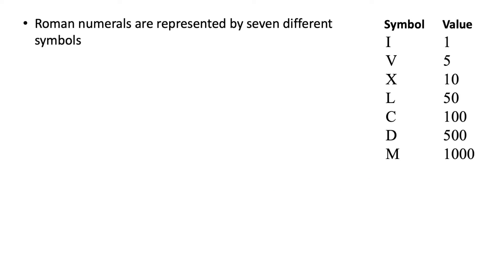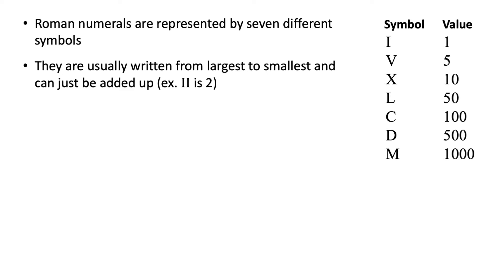Roman numerals consist of 7 different symbols, and each one corresponds to a different number, as you can see on the right. Generally, they are written in order of largest to smallest, and all you have to do is just add the digits up one by one. For example, II is just 1 plus 1, which equals 2.